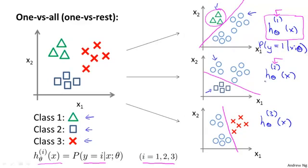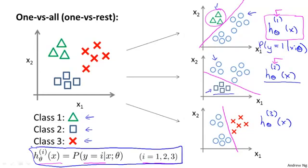And similarly, this is treating the square class as a positive class, and so it's trying to estimate the probability that y is equal to 2 and so on. So we now have three classifiers, each of which was trained to recognize one of the three classes.